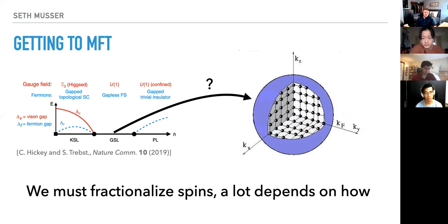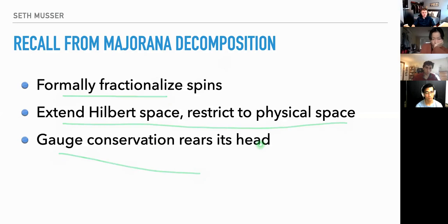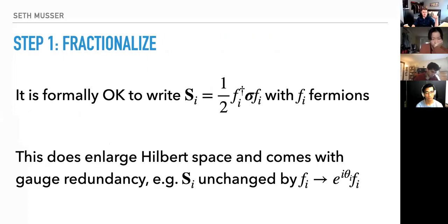To get a mean field theory of this U(1) gapless Fermi surface state seen in numerics, we need to fractionalize our spins. Taking lessons from the Majorana decomposition — where we formally fractionalized, extended the Hilbert space, restricted it, and got gauge conservation — we want to apply that to the Fermi surface description.